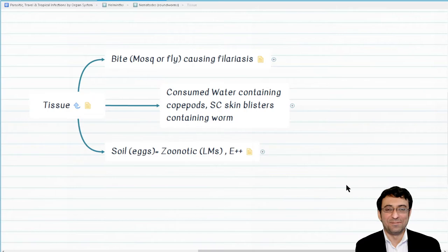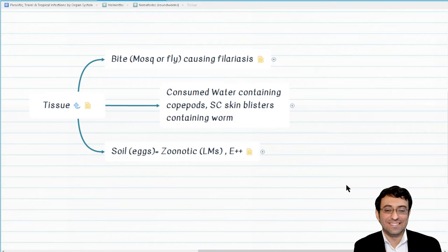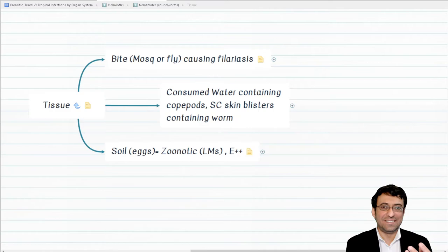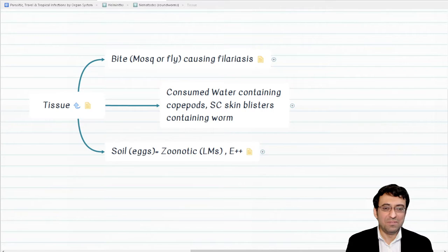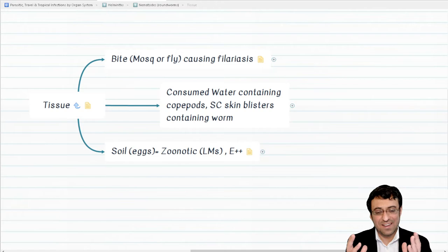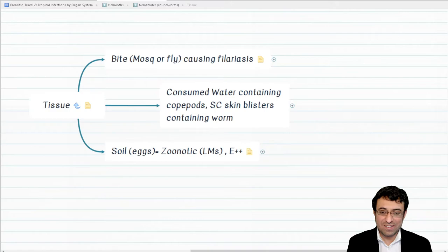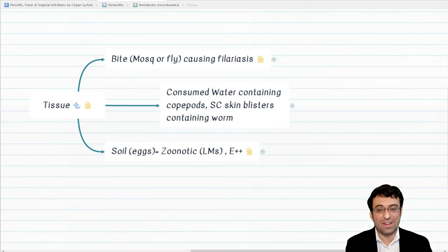Tissue nematodes are a subject many may not have studied well, but we need to cover them thoroughly. We have two main groups of diseases associated with tissue nematodes. One group is transmitted by larva — injected or ingested into humans — where the mature adult worm causes the symptoms. The other group is due to egg transmission to humans, and this is called larva migrans.